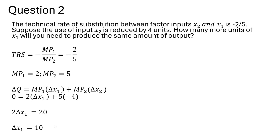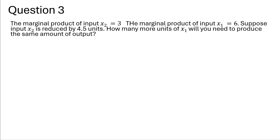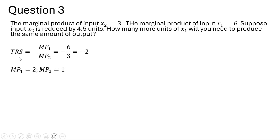We have to increase the input usage of input 1 by 10 units to maintain the same amount of output if input 2 is being reduced by 4 units. In question 3, the marginal product of input 2 is 3 and the marginal product of input 1 is 6. Suppose that input 2 is reduced by 4.5 units. How many more units of input 1 will you need to produce the same amount of output? Setting up the TRS formula and plugging in the respective marginal products, we get a value of minus 2, which simplifies to a marginal product of input 1 of 2 and the marginal product of input 2 of 1.